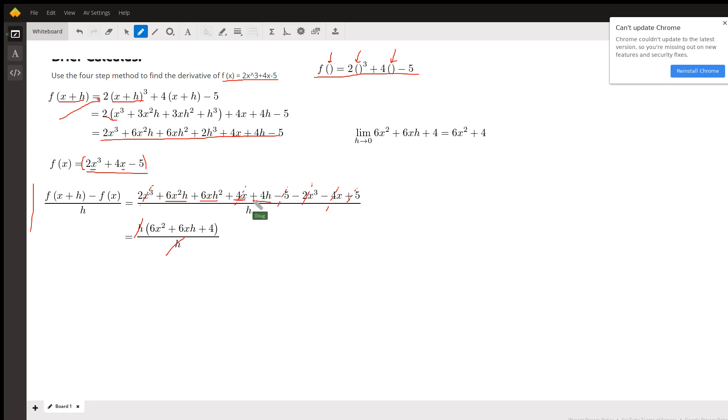Each of those terms contains the factor h. If I factor out that h, I get h times that quantity. But the h's in the denominator cancel out.